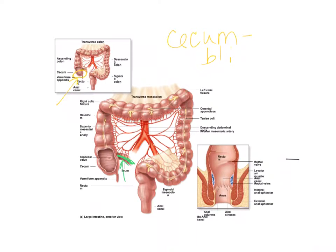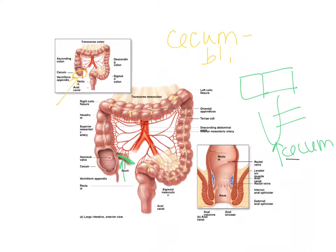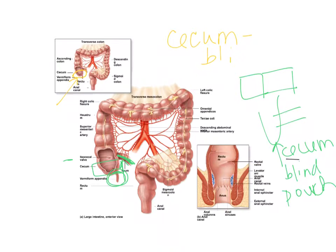The ileum comes in and lines up with the cecum — the connection is more like a side junction, making the cecum a blind pouch. Sometimes food gets stuck in there, and that's where appendicitis can occur. The appendix hangs off the edge, about the size of a pinky finger. The ileocecal valve is the connection between the small and large intestines.